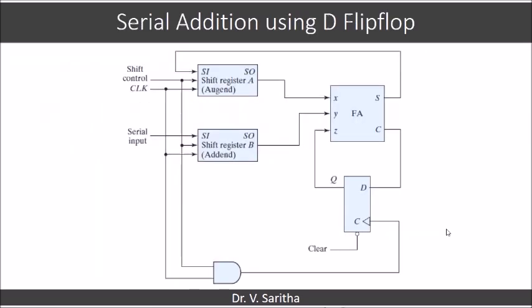This is the circuit for serial addition using D flip-flop. If you see, shift register A and shift register B we are taking. Shift control should be 1 because these are the shift registers.